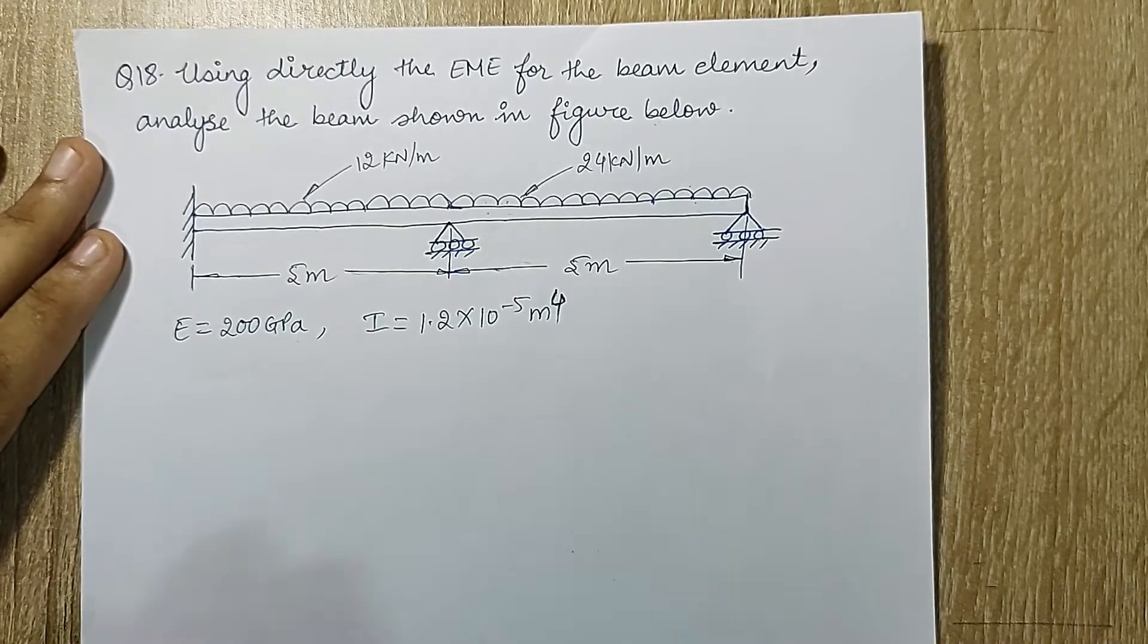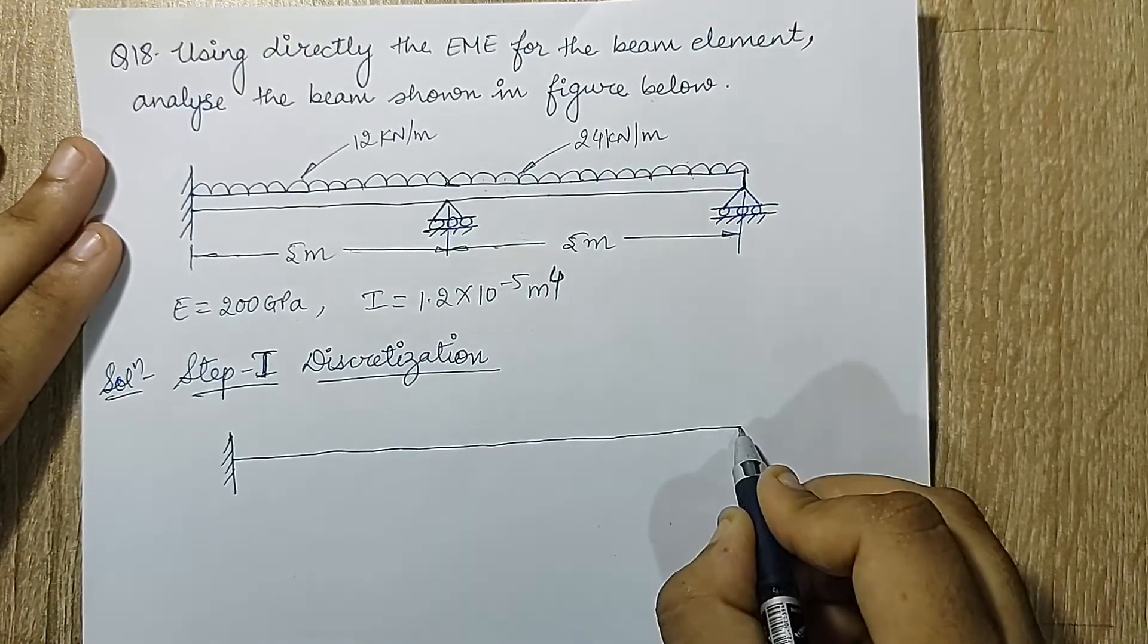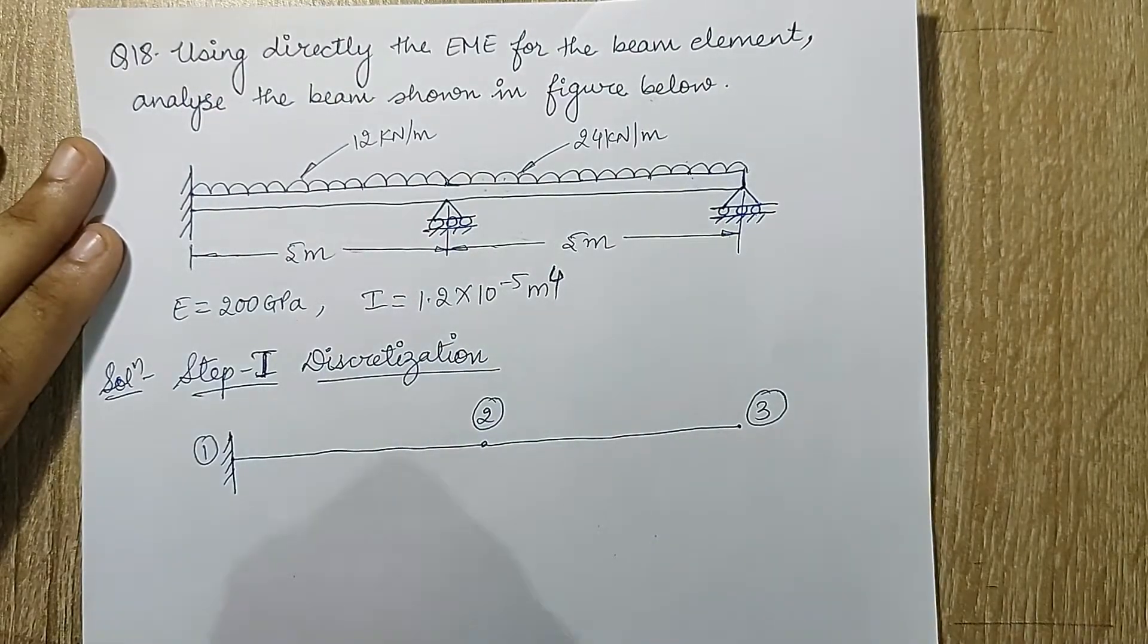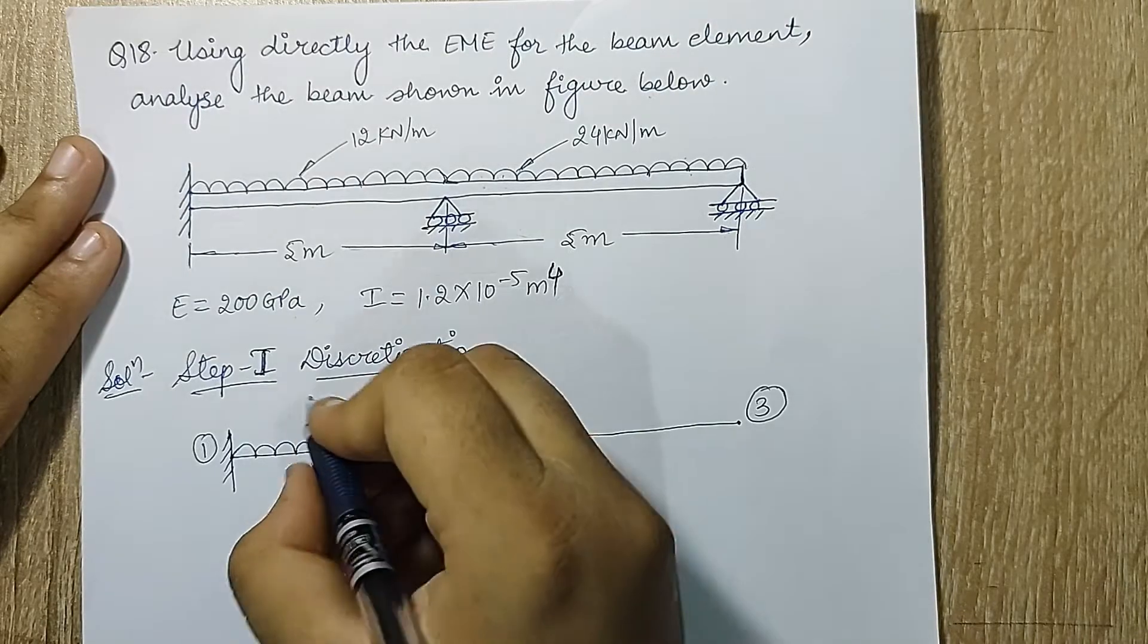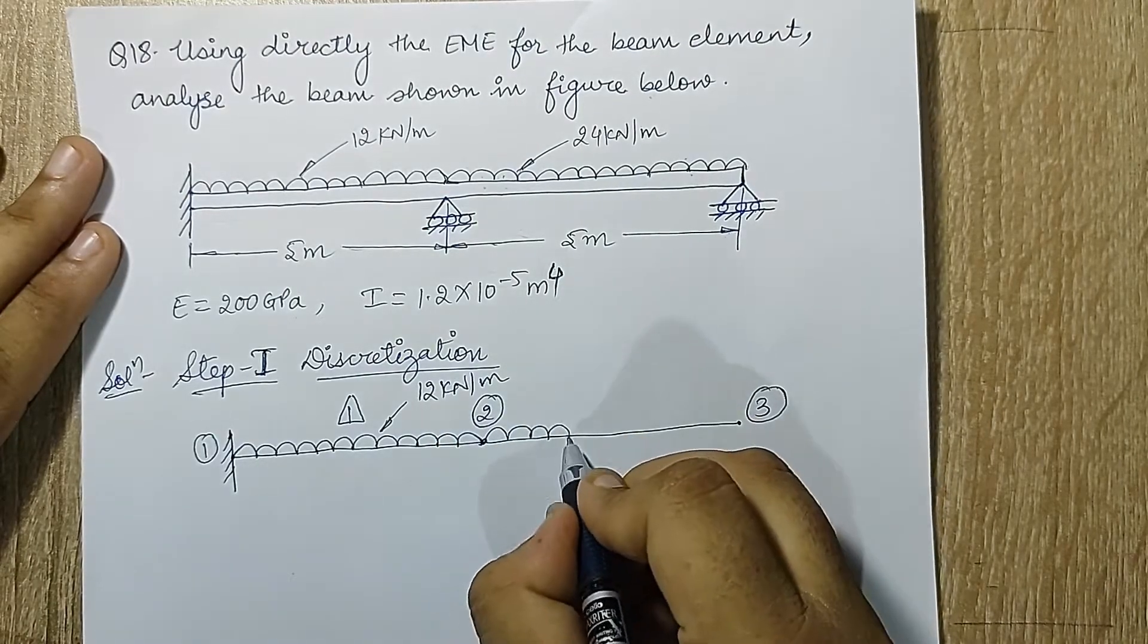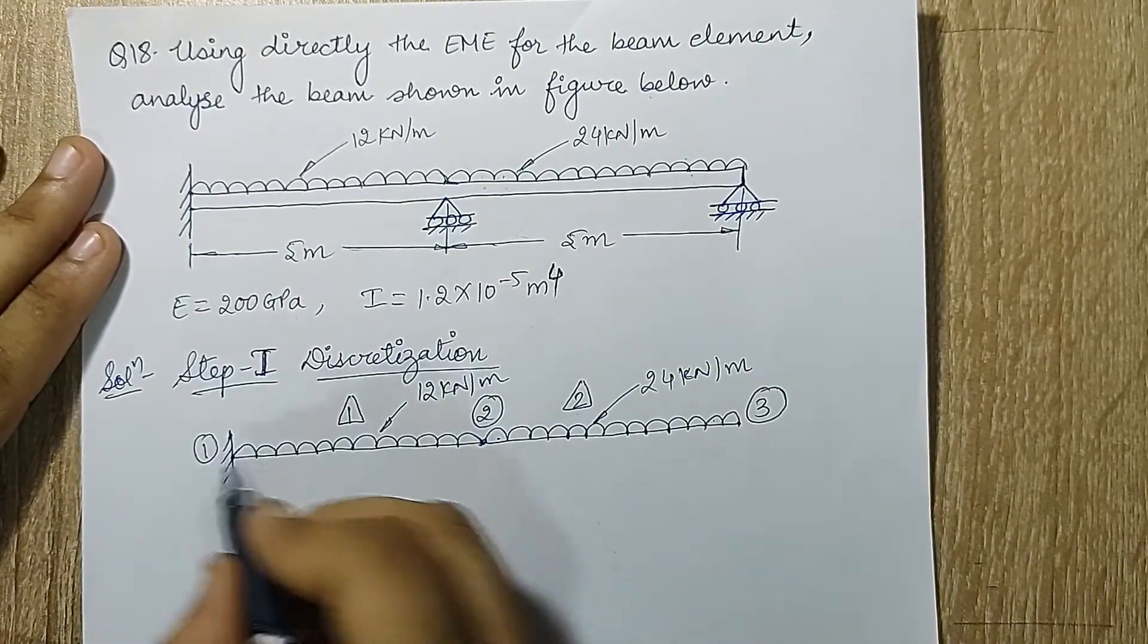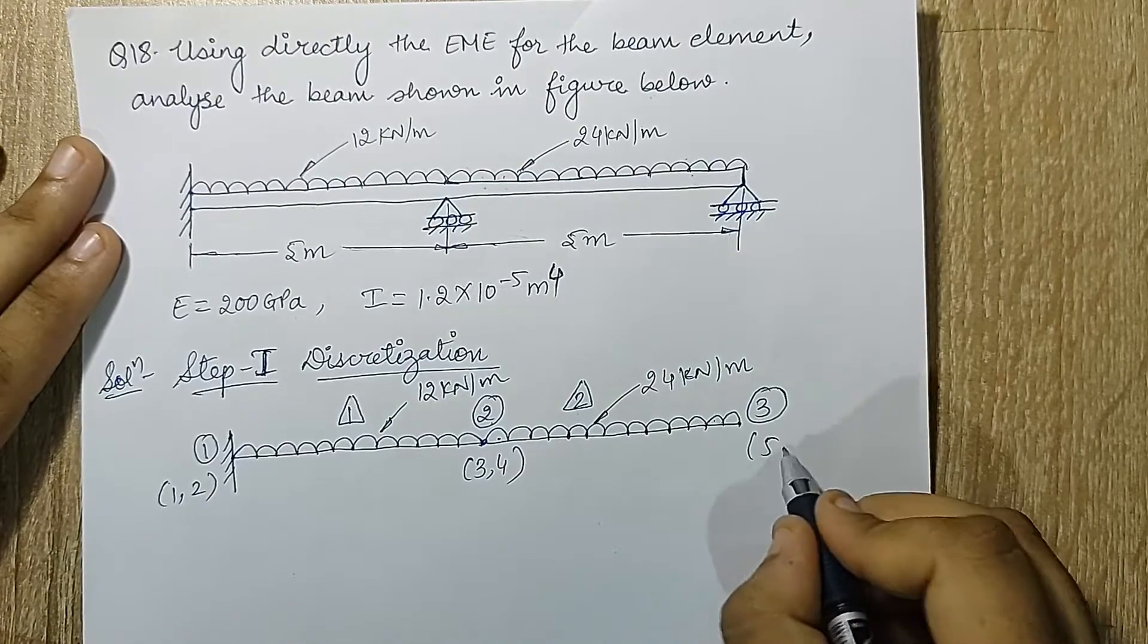The first thing that I will do is discretize this diagram. I will draw the fixed end. I will draw the beam as a straight line. Here I will have node 1. At this point here I will have node 2 and at the end I will have node 3. At each node I am going to have 2 degrees of freedom. So I will write here 1,2, here 3,4, and here 5,6.